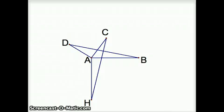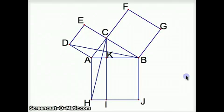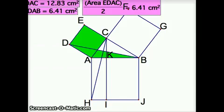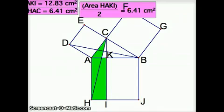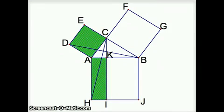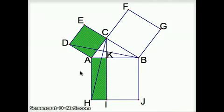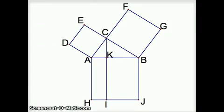Now that these two triangles are congruent, they have the same area. The first triangle had half the area of the small square, and the other triangle had half the area of the left-hand rectangle. So we have half of our proof done: the small square has the same area as the left-hand rectangle.